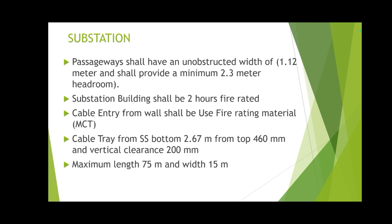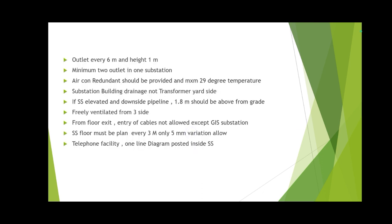The cable tray minimum height from the substation floor should be 2.67 meters, and from the top of the cable tray there should be 460 mm of clearance. The vertical distance inside the substation is 200 mm. Inside the substation, cable tray covers are not required. The maximum substation size is 75 meters in length and 50 meters in width. Outlets should be placed every 6 meters at a height of 1 meter, with a minimum of 2 outlets per substation.